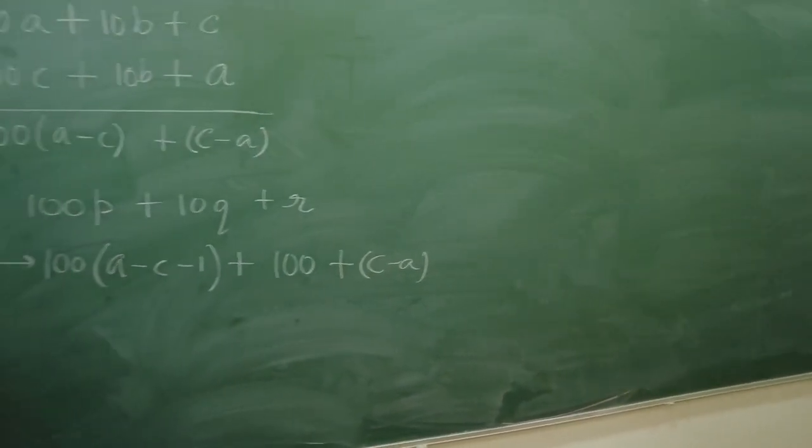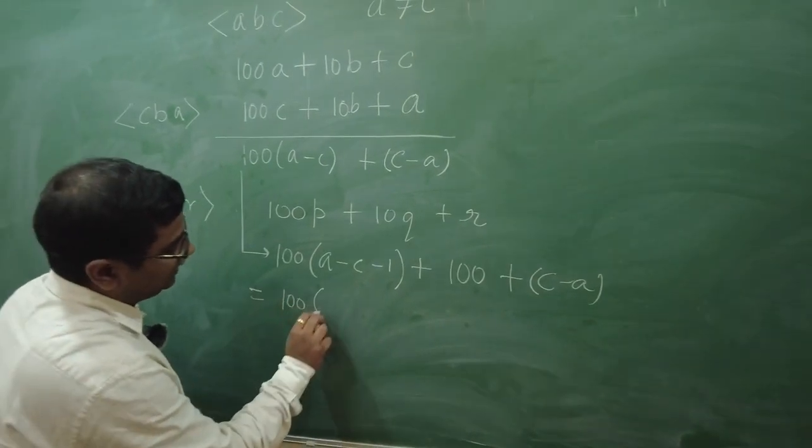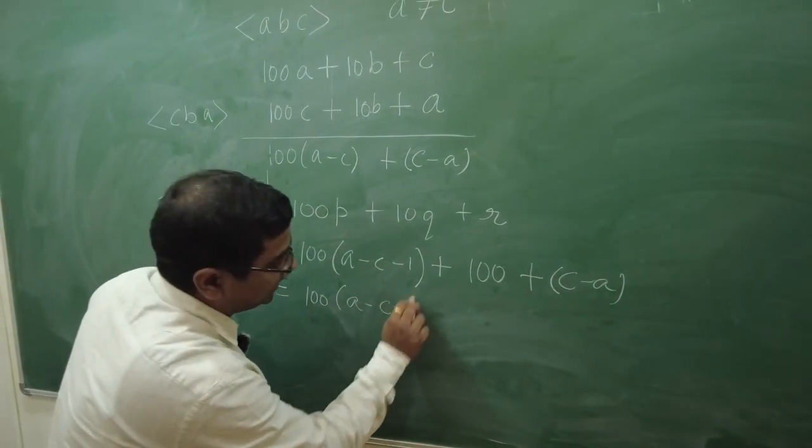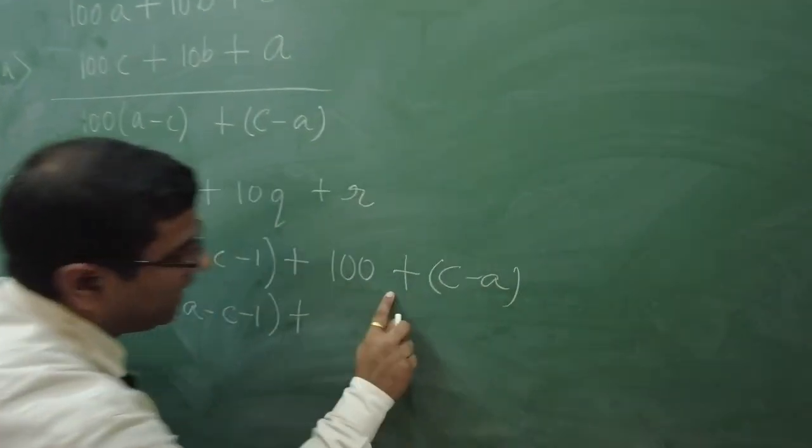Then, what I can write it as, once again, see carefully. A minus C minus 1 plus, my dear friends. I can write this 100 as, 9 into 10 plus 10 plus C minus A. Right?